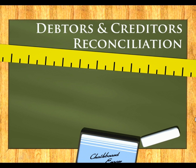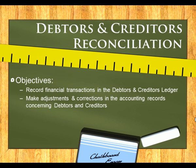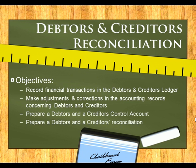In this section we are going to be dealing with the debtors and creditors reconciliation. Our objectives are to record the financial transactions in the debtors and creditors ledger, to make the adjustments and corrections in the accounting records concerning debtors and creditors, to prepare our debtors and creditors control accounts in the general ledger, and to prepare a debtors and creditors reconciliation at the end of the month.